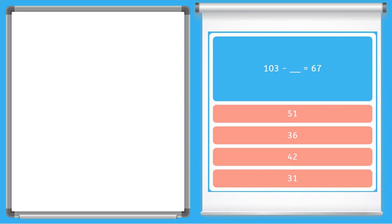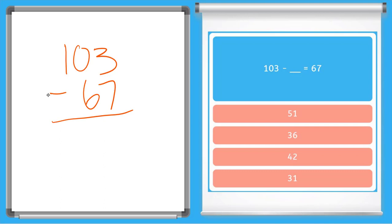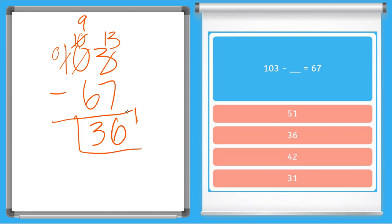Alright, so with this next one we have 103 minus an unknown equals 67. Let's flip that problem around, so we have 103 and let's subtract 67. We need to take 7 from 3, but we'll need to borrow — and we cannot because there are no tens to borrow from. So we borrow from the hundreds: we now have 0 hundreds, which makes 10 tens. Now we borrow from the tens place, leaving 9 tens, and that makes this 3 a 13. 13 minus 7 is 6, 9 minus 6 is 3, and 0 minus 0 is nothing. Our answer is 36, so 103 minus 36 equals 67.